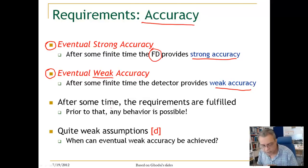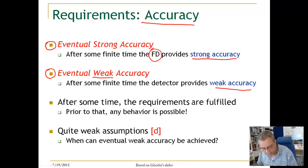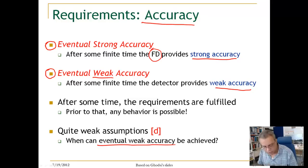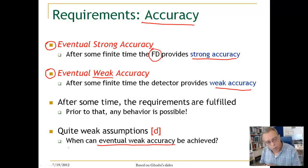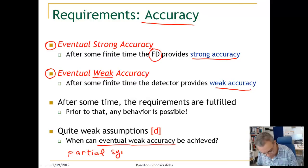This is actually a weak kind of accuracy. When this eventual weak accuracy can be achieved — of course, thinking of eventual things working well — you think of partially synchronous systems.